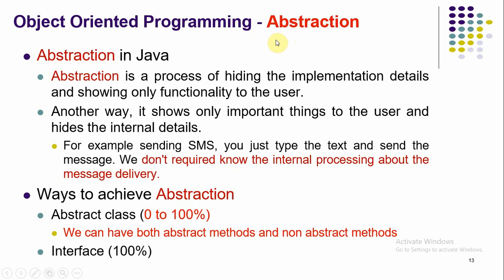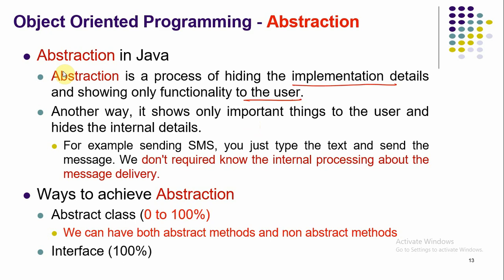Interface is used to implement abstraction, which is another important concept of object-oriented programming. In OOP we use class and object, inheritance, and polymorphism. Abstraction is also an important feature — it means hiding the implementation details and showing only the functionality to the user, exposing only the services provided by the system. It makes a system simple without exposing much complexity.